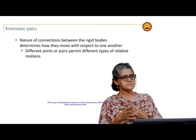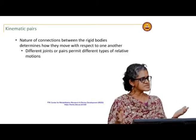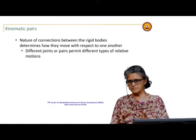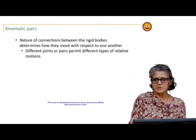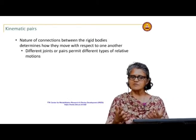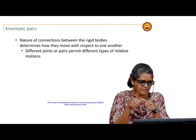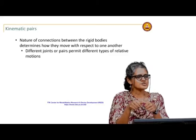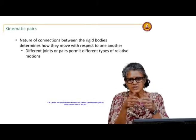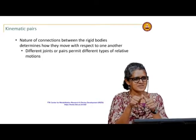Kinematic pairs are basically the types of connections between rigid bodies. To make a mechanism, we connect these bodies in certain ways. The nature of the connection between any two bodies determines how they move with respect to one another, and usually the classification is based on what kinds of motions are permitted. If I glue two things together, there is no motion permitted — it becomes one rigid body, which is not what we want for movable mechanisms.